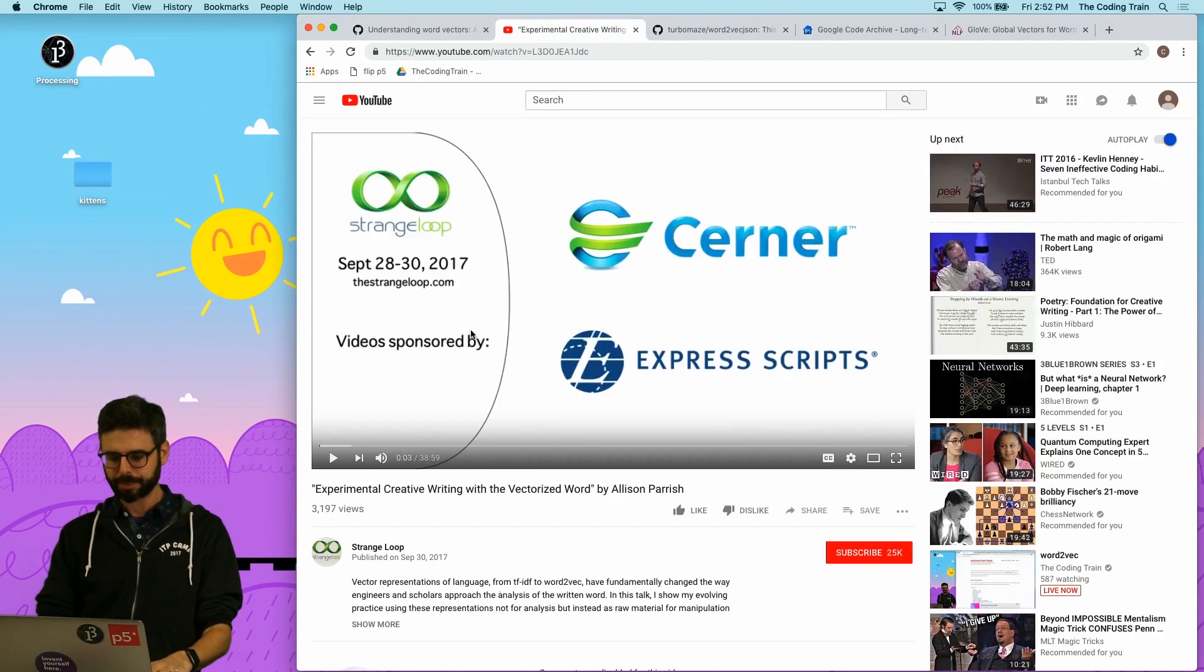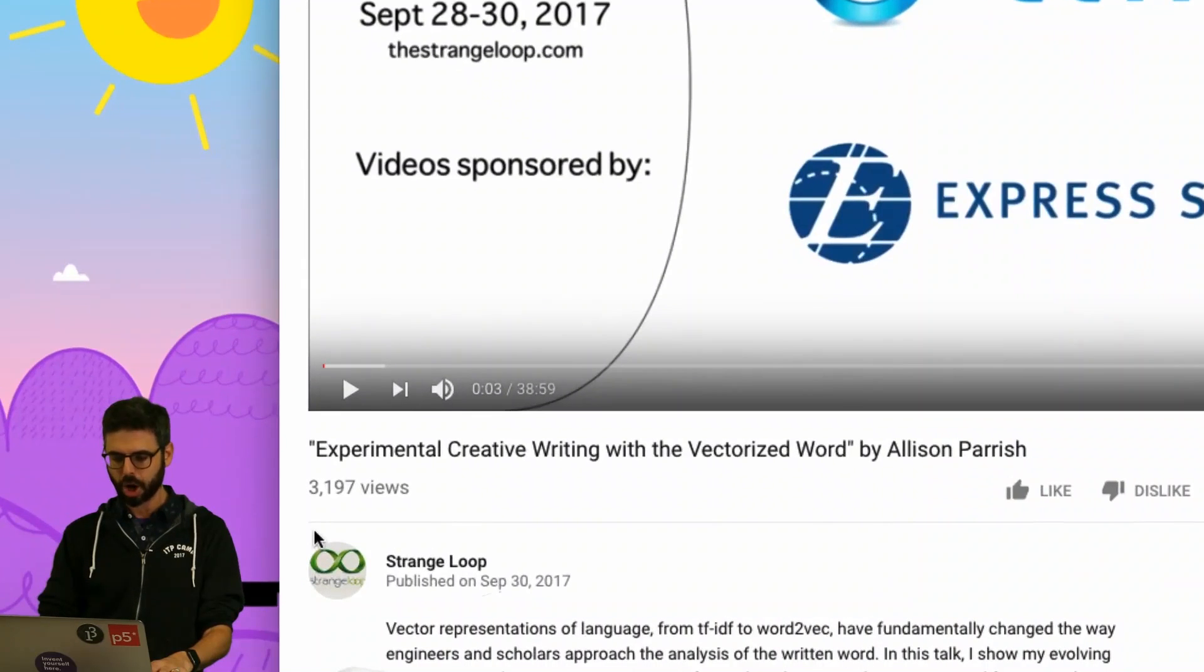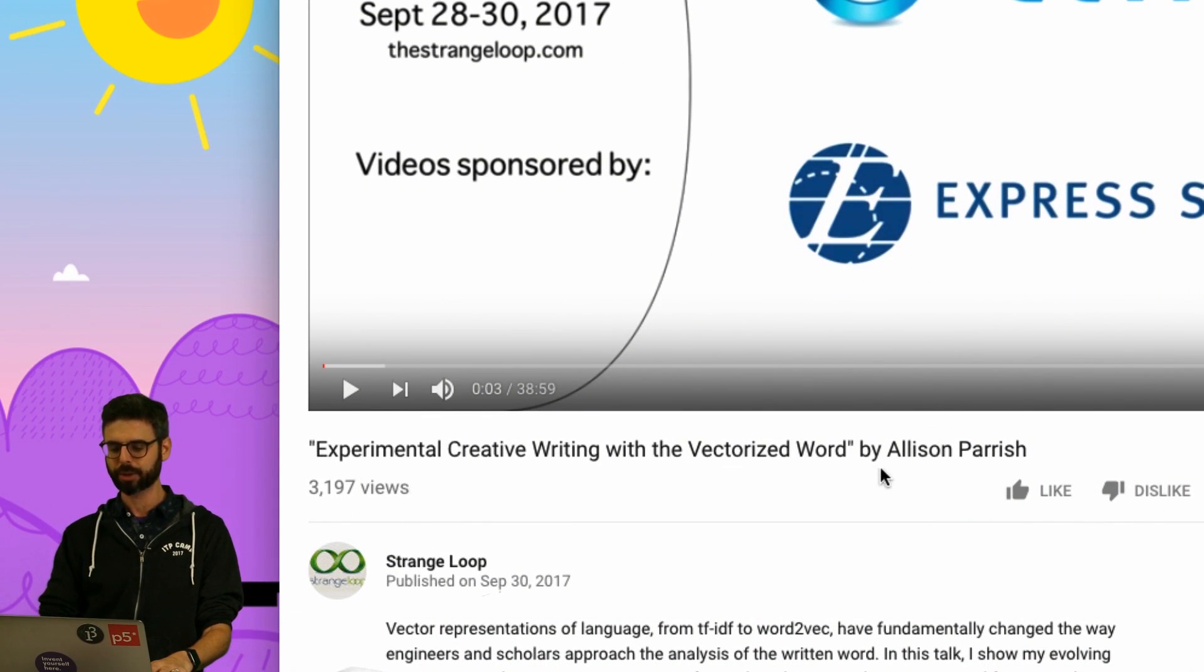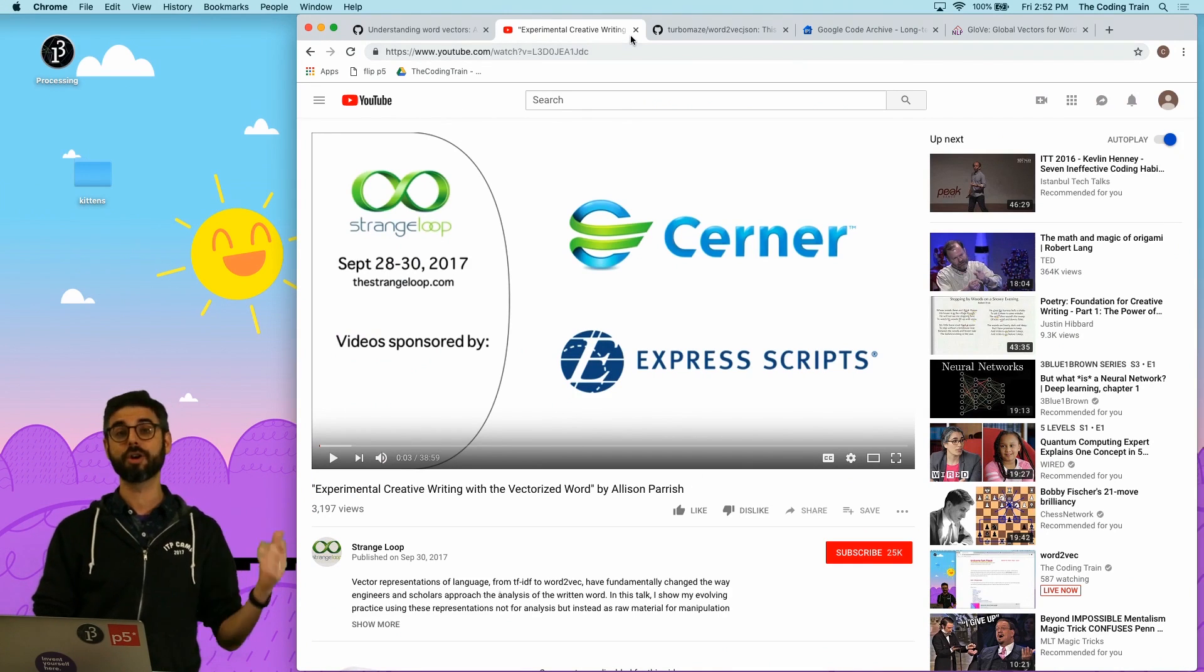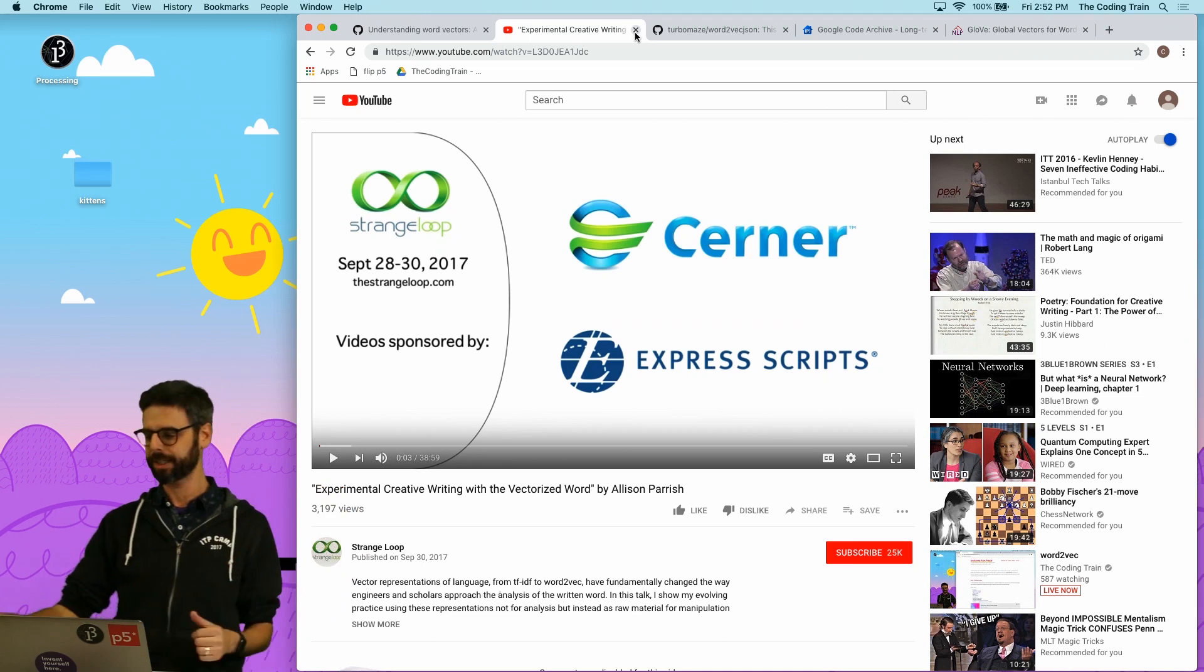So I also want to mention that Alison Parrish has a wonderful talk, it's on YouTube, I will link to it called Experimental Creative Writing with the Vectorized Word from the Strange Loop Conference. So I also encourage you to take a look at that as inspiration and background for what it is I want to show you.